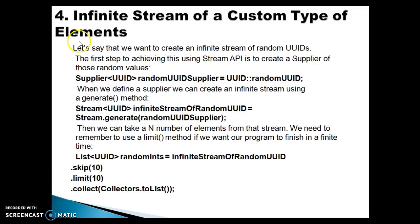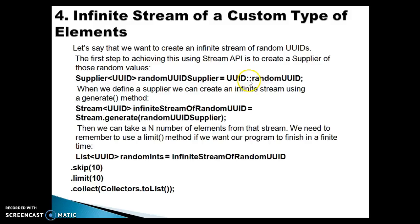Here you can see in these slides — let's say that we want to create an infinite stream of random UUIDs. UUID is a class in Java and this class is used to generate a session ID when you have a web-based kind of application. The first step to achieving this using a Stream API is to create a supplier of those random values. The UUID class has a static method called randomUUID which is used to generate a UUID, and we can refer to this method by using method reference — a feature of JDK 1.8.